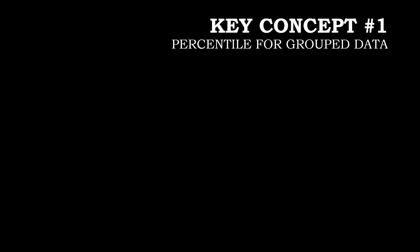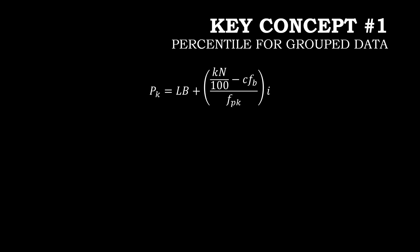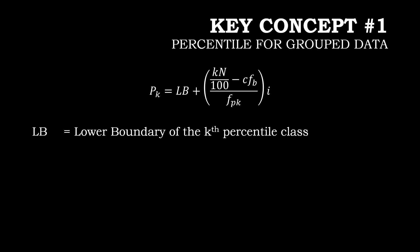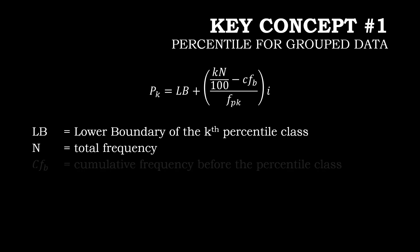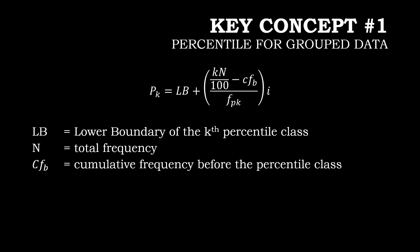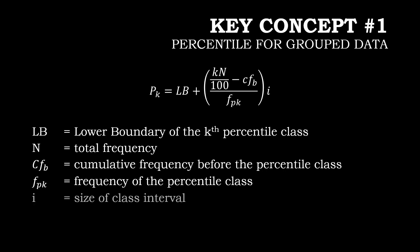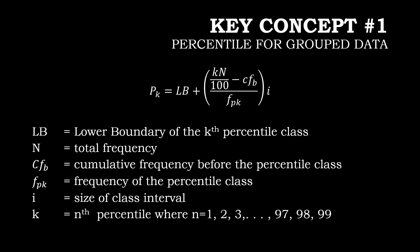For our key concept number 1, the percentile for grouped data. To solve for the percentile for grouped data, we have the formula: the Kth percentile is equal to LB plus the quantity of PN over 100 minus CF sub B, divided by F sub K percentile, multiplied by I. Where LB is the lower boundary of the Kth percentile class, N is the total frequency, CF sub B is the cumulative frequency before the percentile class, F sub K is the frequency of the percentile class, I is the size of the class interval, and K is the Nth percentile where K equals 1, 2, 3, up to 97, 98, and 99.